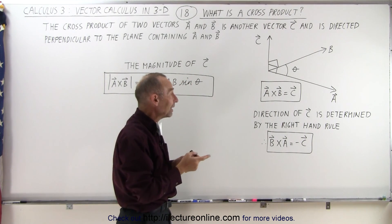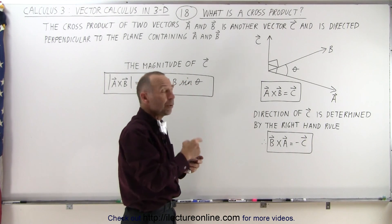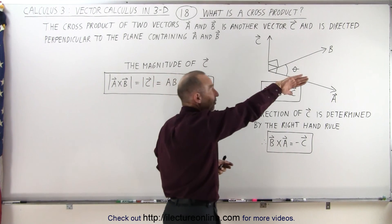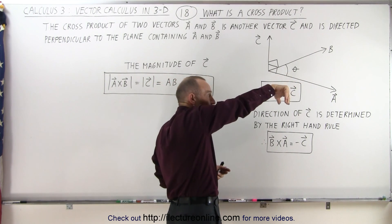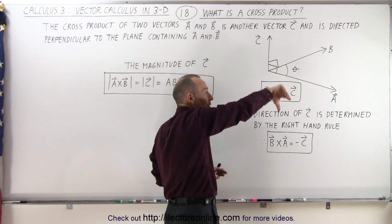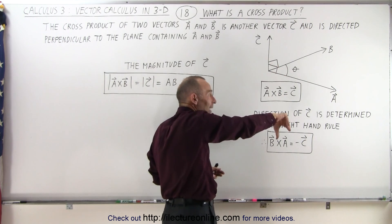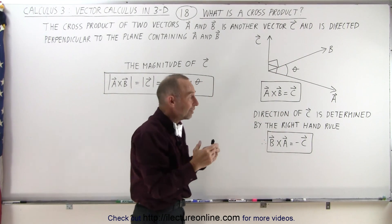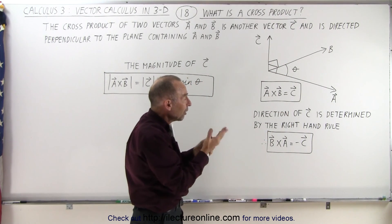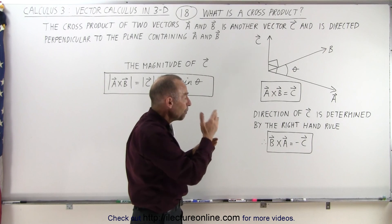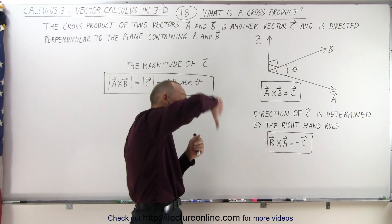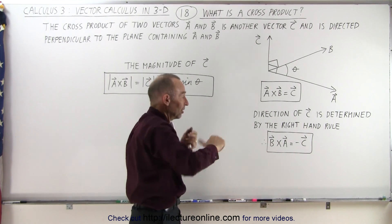Now notice that if we go B cross A, you have to point your fingers in the direction of B, curl your fingers in the direction of A, and now your thumb points downward — which means the direction of the cross product for B cross A, instead of A cross B, is exactly in the opposite direction.